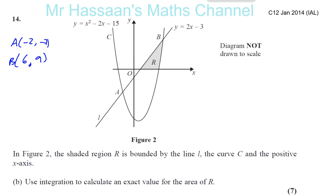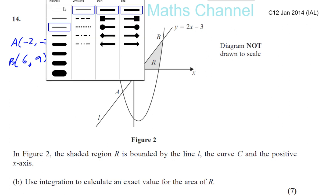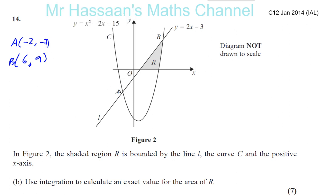We already found the coordinates of A and B where the line and the curve intersect, which is at (-2, -7) and (6, 9). These are the two coordinates of those two points.